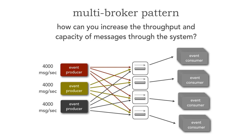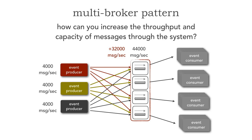Again, message order will not be preserved here either, but it wasn't in the original scenario either. Notice each broker can process eleven thousand messages a second, which means this grouping has a capacity of forty-four thousand messages a second. Since we're only passing through twelve thousand messages a second, we have extra capacity of thirty-two thousand messages a second. That's overkill in this particular scenario — two brokers would have probably been fine — but that's where the math comes in about how many messages you're producing versus how many a broker can actually process. This is a way of expanding a simple pattern to distribute load across multiple brokers and increase both capacity and throughput.